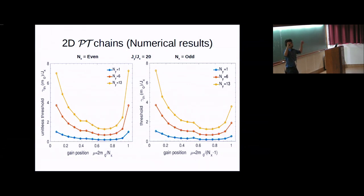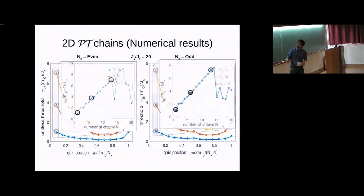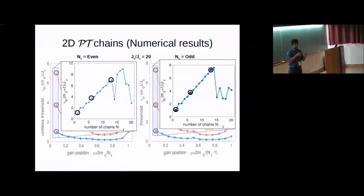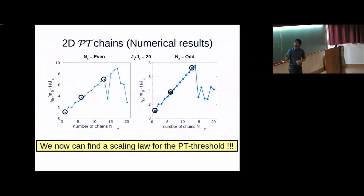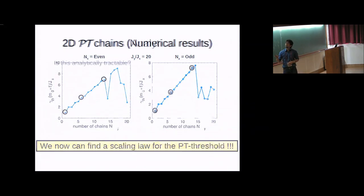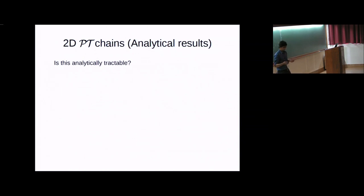Now if you just consider these points here, for example when the impurity is the furthest apart. If you map it as a function of the number of chains you increase, you see that there's a clear trend, a linear trend. So you can now find a scaling law for this. Can we do it analytically? Of course we can.